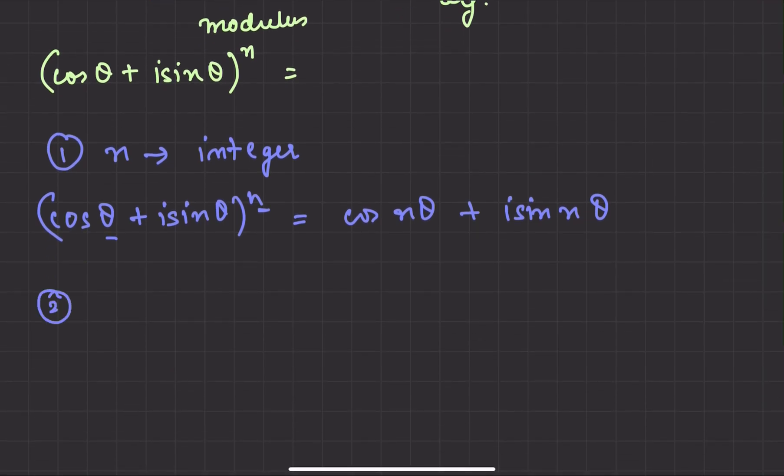Okay, if it is an integer, then what happens in the second case? If n is a rational number, rational number is in fractionalized form. So cos theta plus iota sin theta to the power P by Q. Now what will happen here? First of all, remember that we will have n roots here. We will have the denominator, which we have given, we will have those roots.